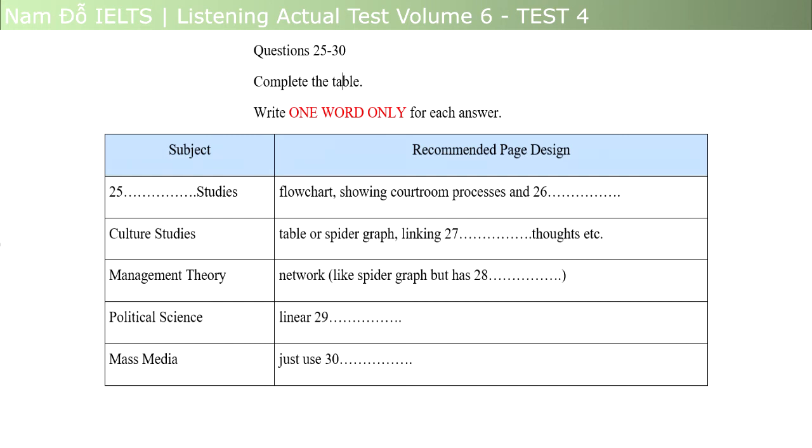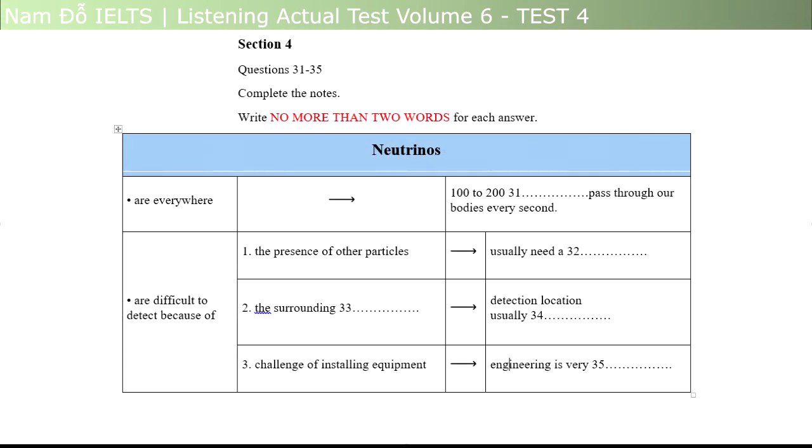OK. That just leaves mass media. For that, I wouldn't have any special design at all. As you say, sometimes it's impossible to predict in what way lecturers will present their information, in which case the best you can do is pre-write headings, but not specific, just general, as in main 1, main 2, sub 1, 2 and 3, and so on. OK. But always be prepared to adapt to the nature of the talk, using any one of the other methods, if it becomes appropriate at the time. That is the end of section 3. You now have half a minute to check your answers.